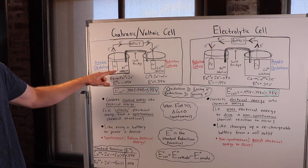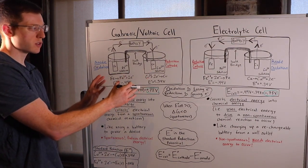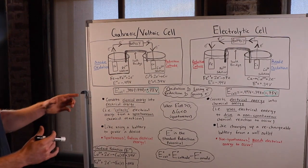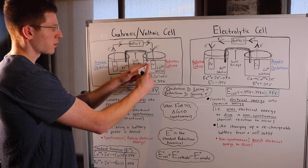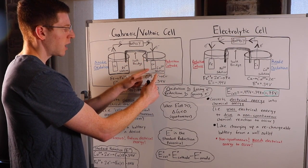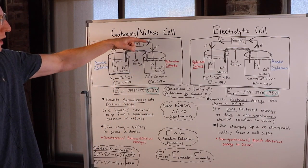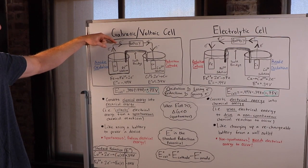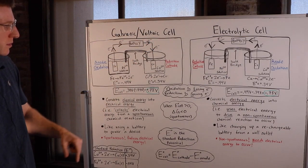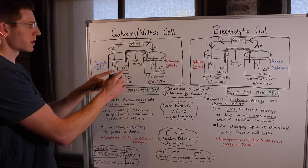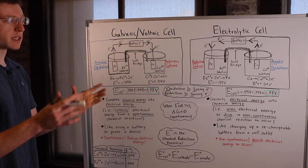The redox reaction here occurs between iron and copper. Over here we have a solution of iron and a solid block of iron, and over here we have a solution of copper and a solid block of copper. These blocks are connected by a wire along which electrons can travel. Another important thing you should know is that these solutions are connected by what's known as a salt bridge, which essentially completes the electrical circuit.